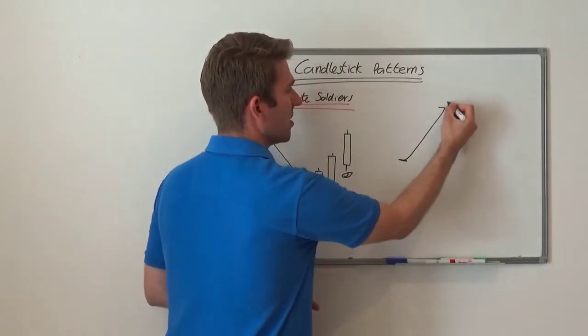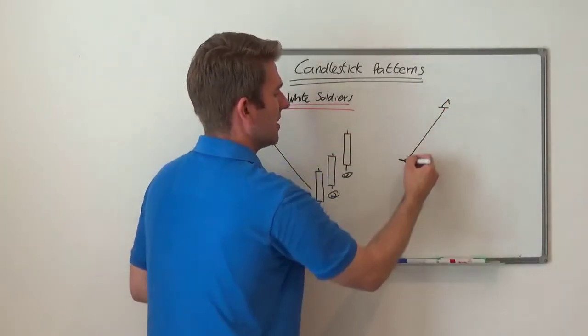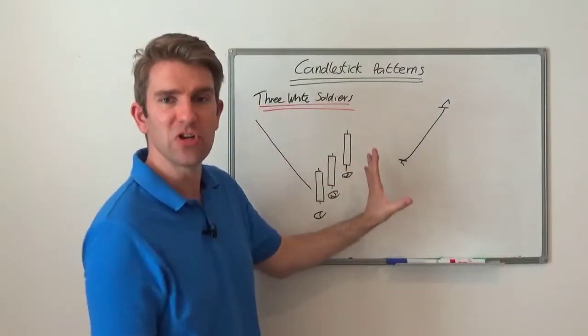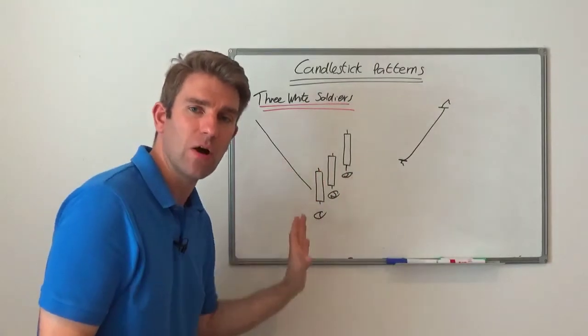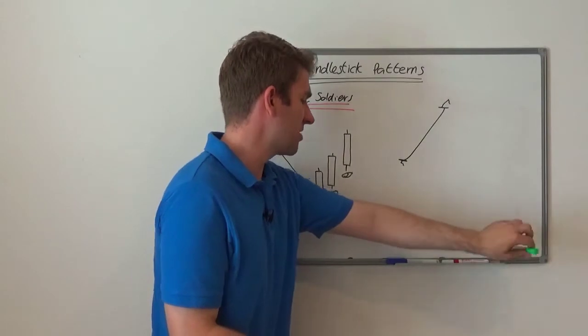It's a high to low. You may have had some action sort of at the close or the open that's gone maybe a little bit above, giving you that tail and wick. But generally speaking, you want the intraday trend to be high to low. That's giving you your solid green candle.